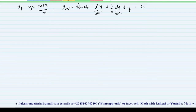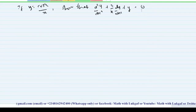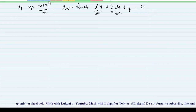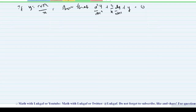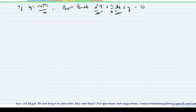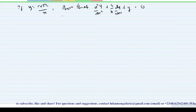Welcome back to my channel. So let's say you were given this kind of question: if y is equal to cos(x) divided by x, then you are asked to show that the second order derivative plus 2 divided by x times dy/dx plus y is equal to zero.